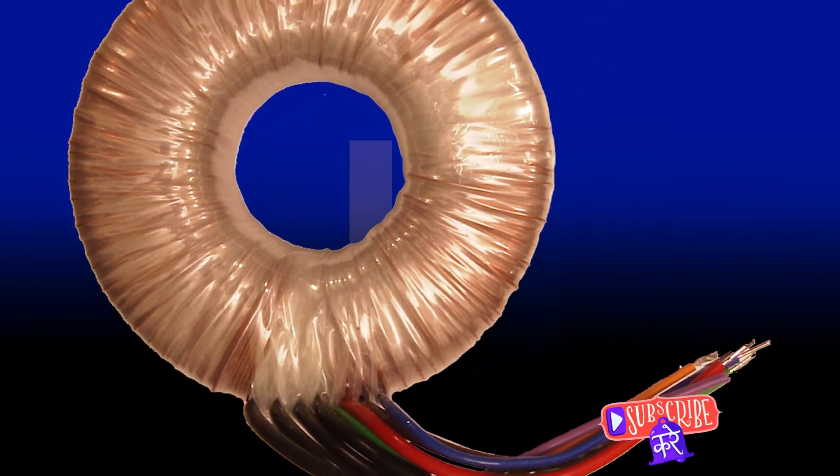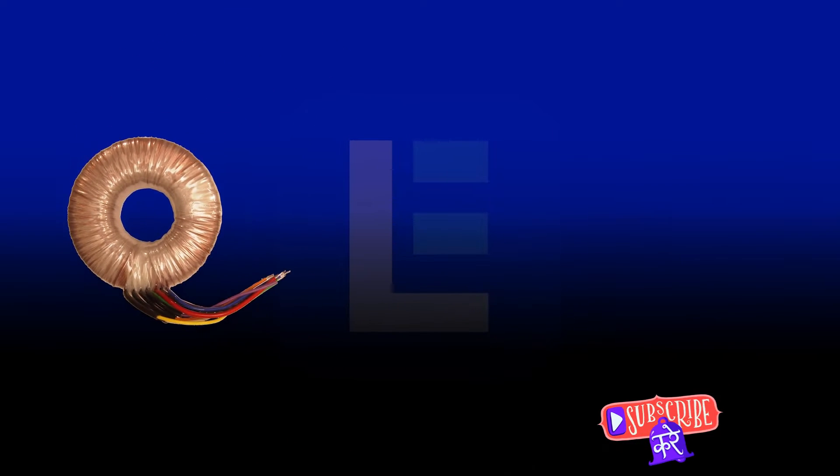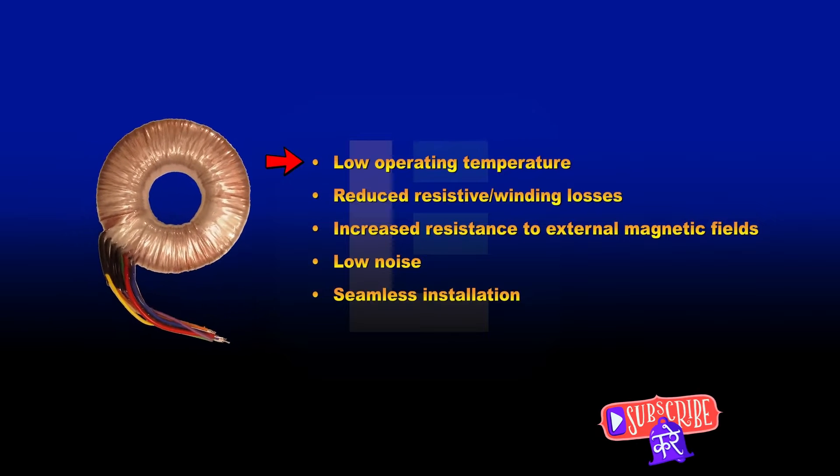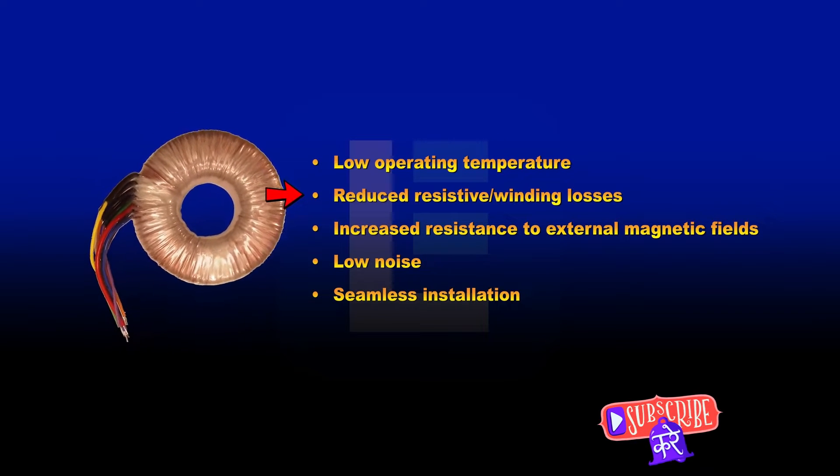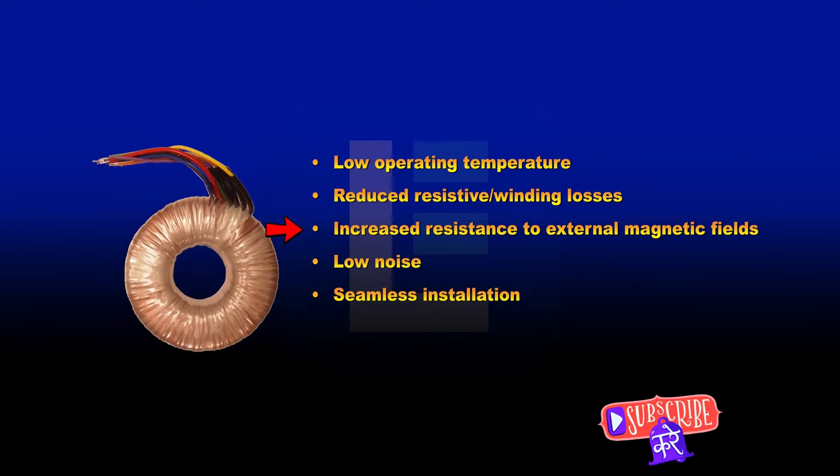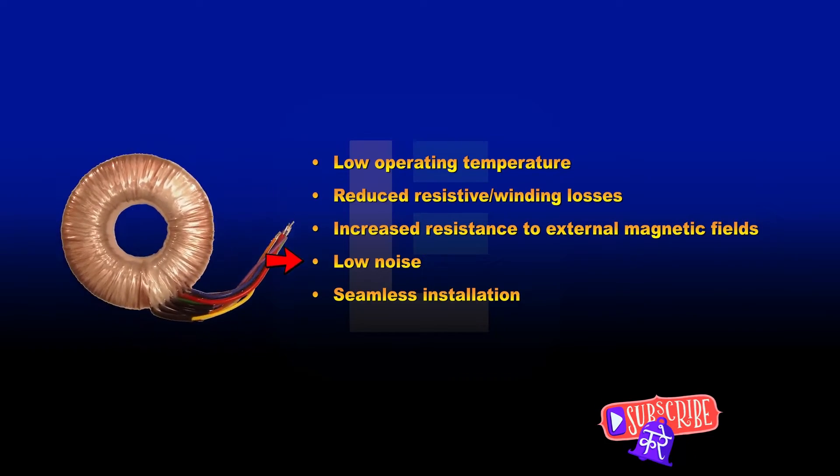Now what sets these transformers apart from traditional ones? The answer lies in their design and operation. Unlike traditional transformers, which lose energy due to magnetic leakage, toroidal transformers are designed to limit this loss. This results in a more efficient operation, making them the preferred choice for many electronic devices.